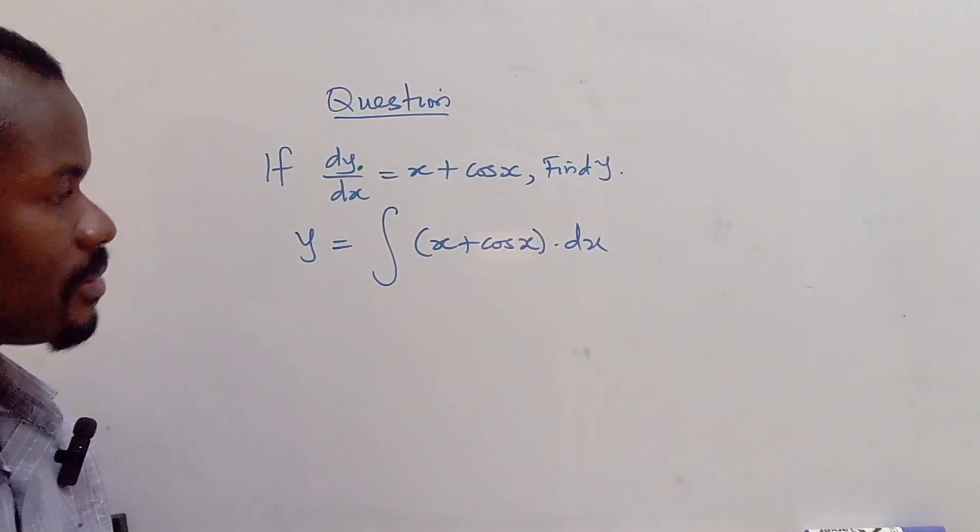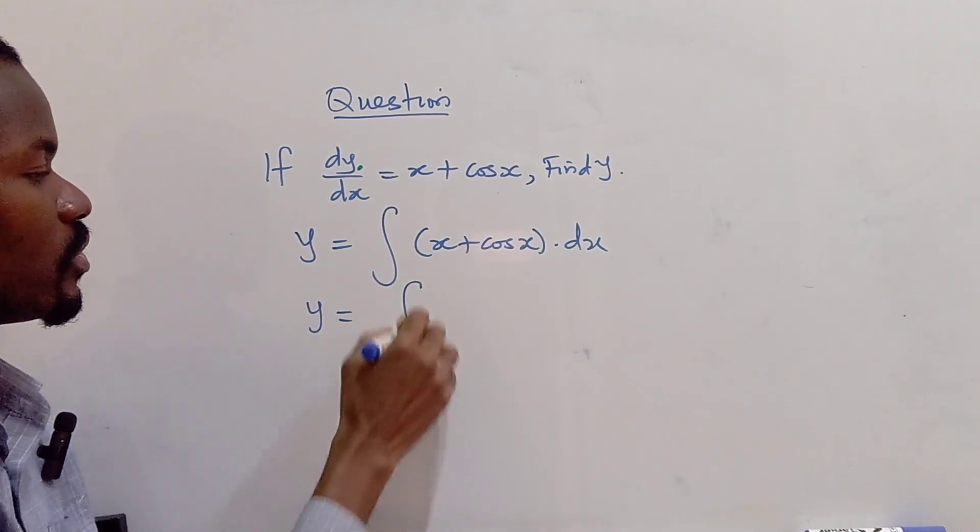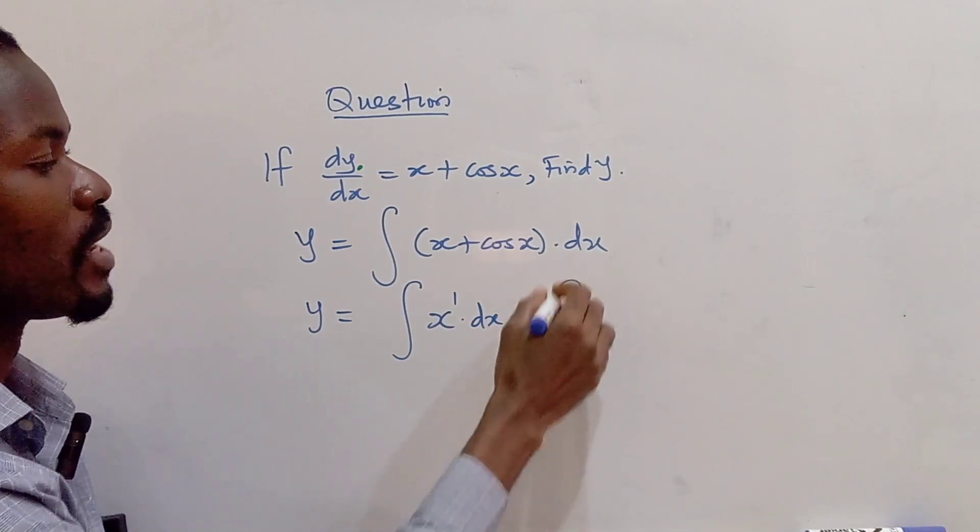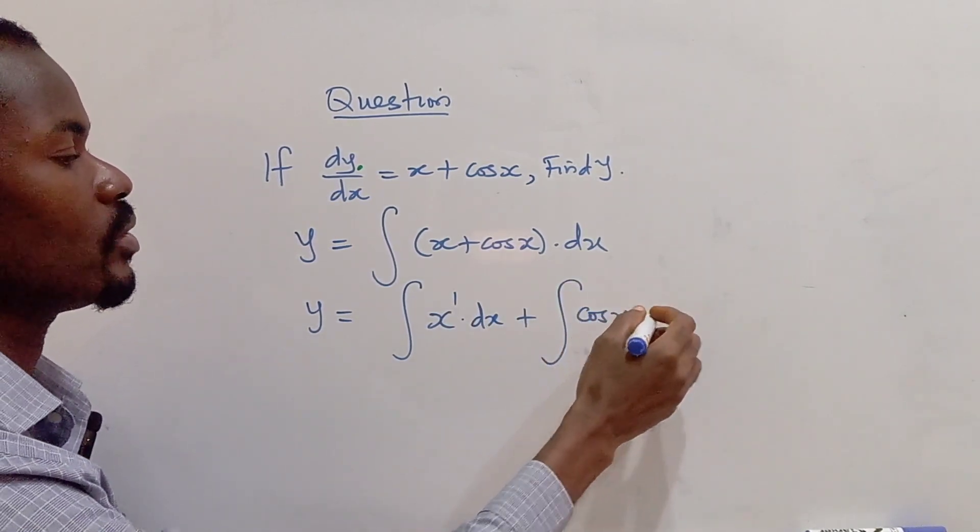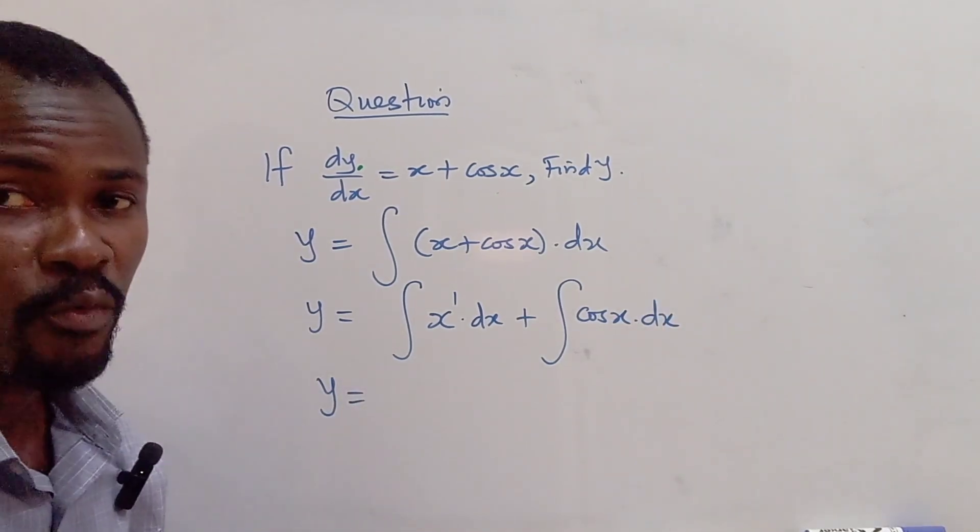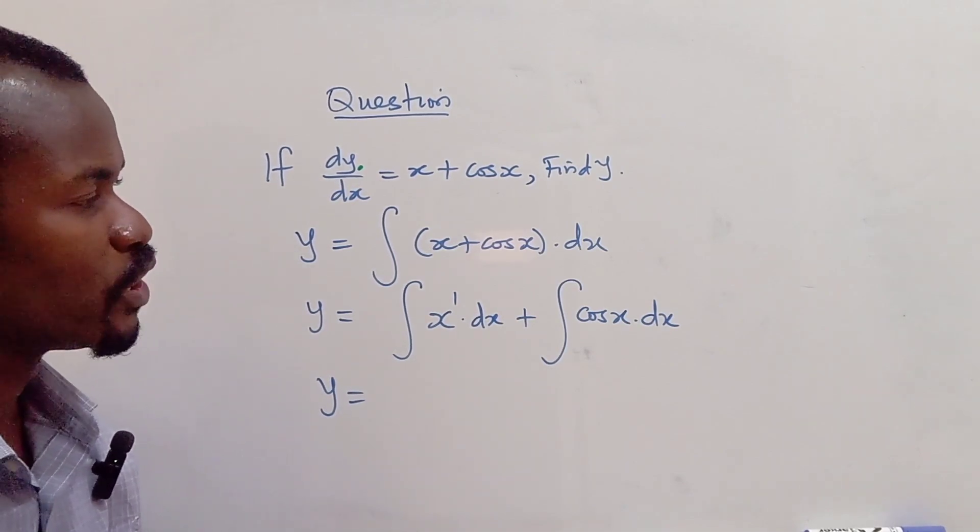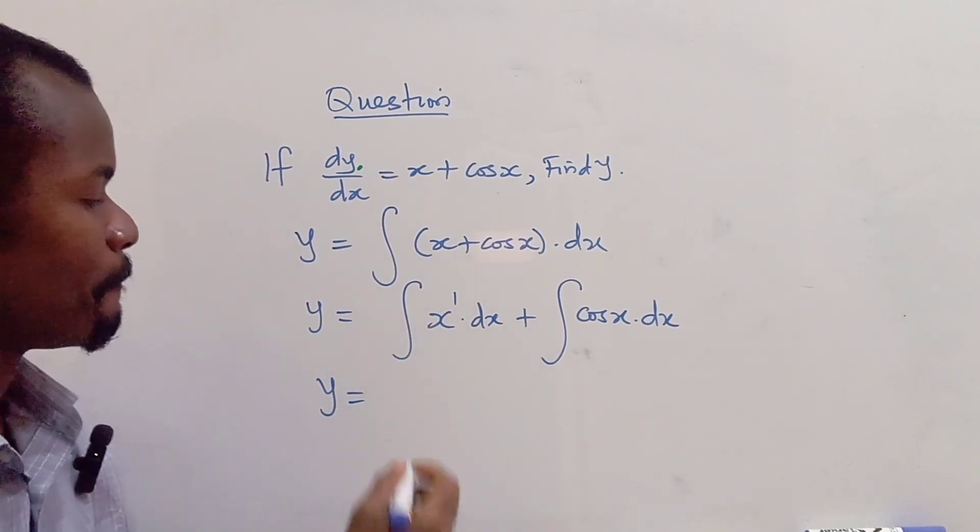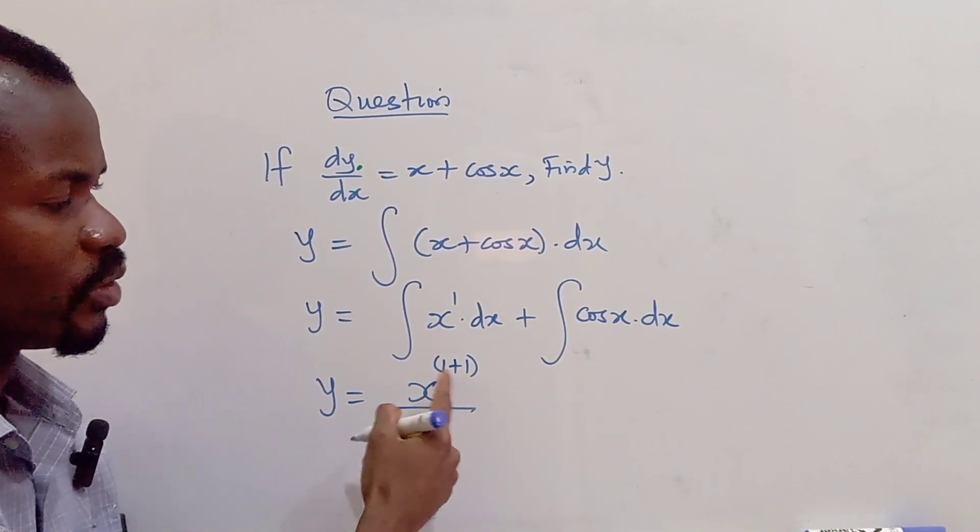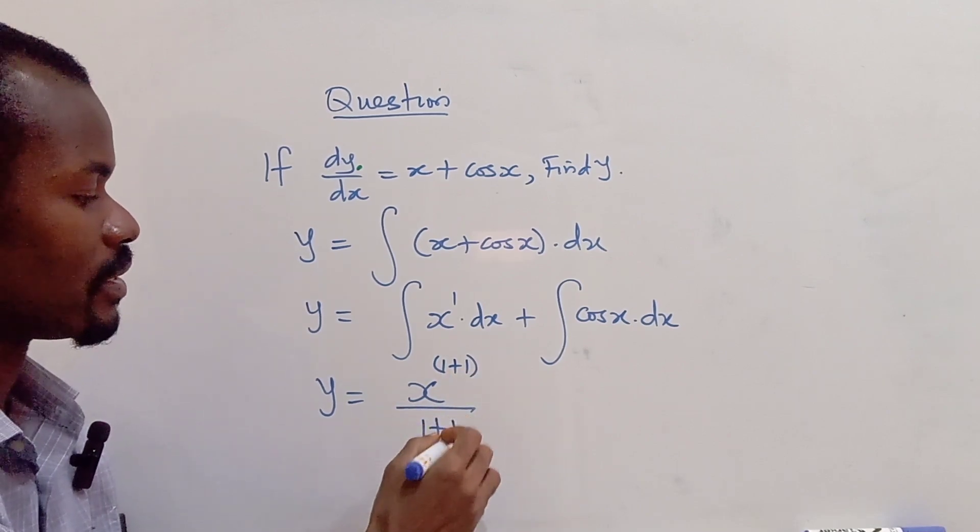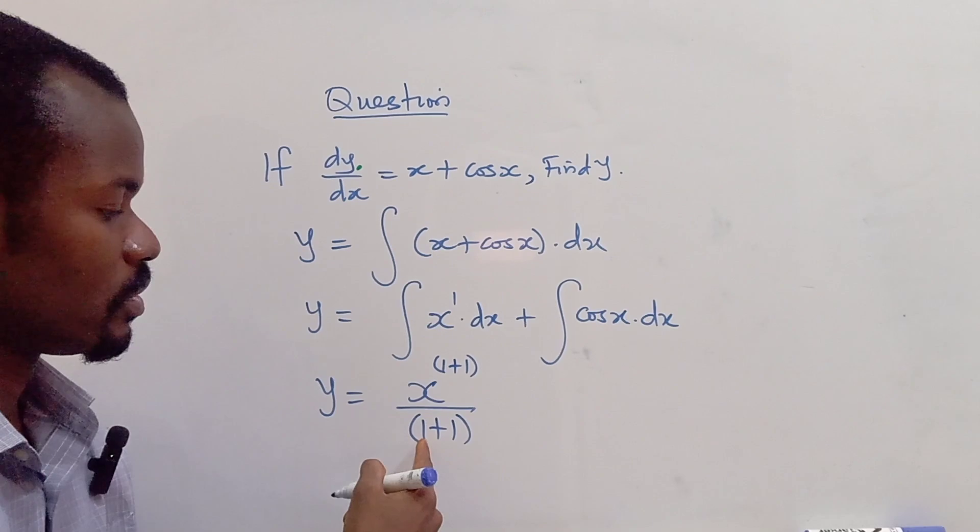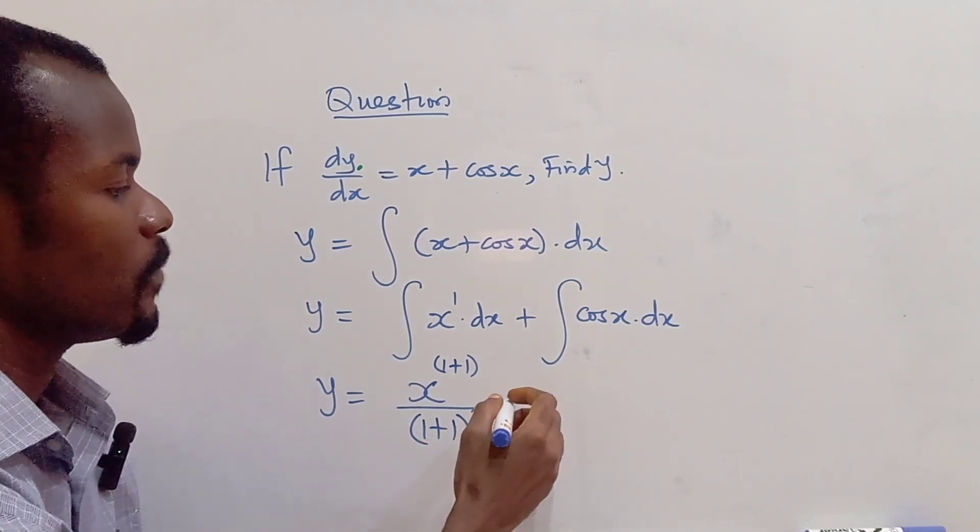Now integrating this, our y will be, we are going to integrate x, x as a power of 1, with respect to dx plus we are going to integrate cos x, with respect to dx. So when you are integrating, what do you do? For integration, you add 1 to the power. So I have x to the 1 plus 1. Now whatever is your new power here, which is 1 plus 1, we are going to write as the denominator. So x raised to power 1 plus 1 divided by 1 plus 1 at the denominator.